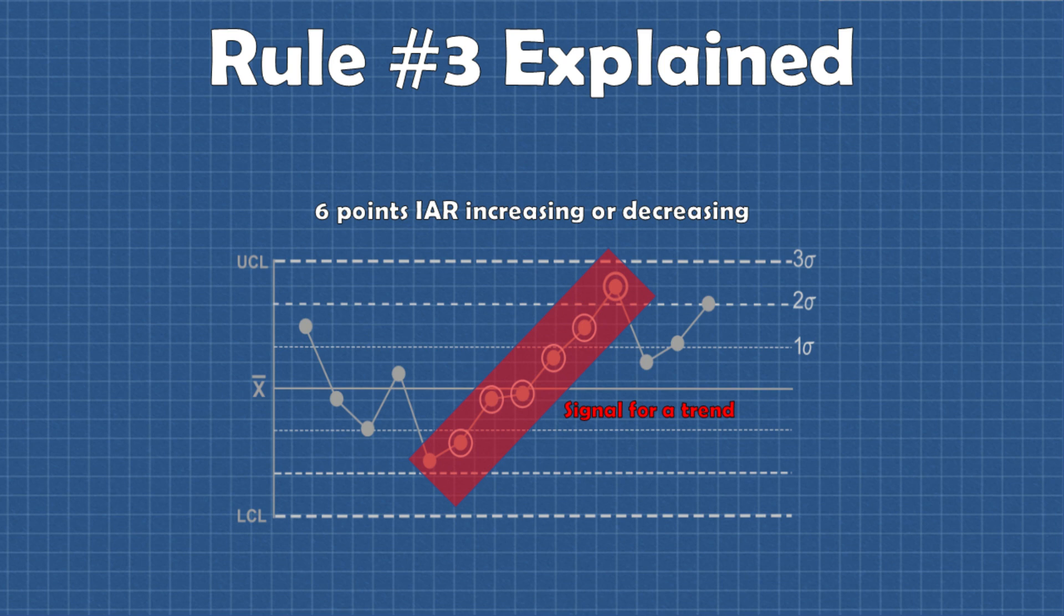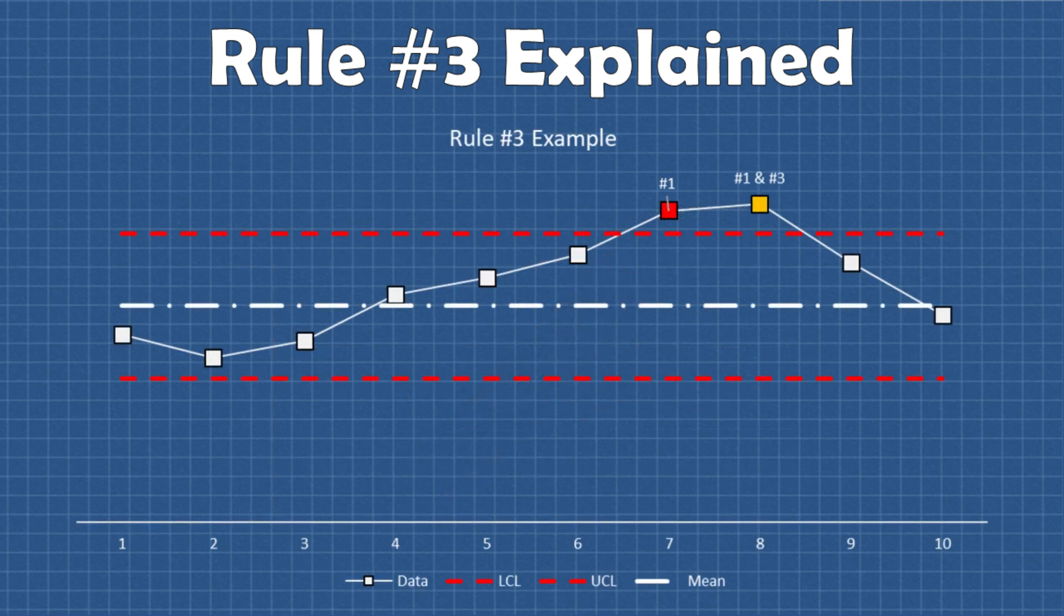But the reason it's controversial is because the likelihood of six points in a row falling between three sigma levels is very low. So the thought is that this rule most likely wouldn't detect a signal any faster than rule one. So why use it? This rule becomes even less effective if we are using other rules like two, five and six.